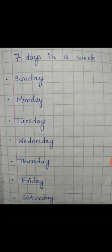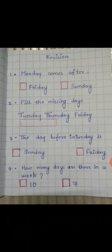You have to do this work in your max copy. Write the heading 'Revision' and write '7 days in a week' and write all the 7 days of the week. After doing this, in the next page, you have to write these things.